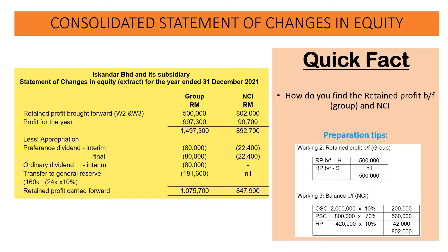For working number three, which is the balance brought forward for the non-controlling interest, we have to calculate the amount based on the percentage of the NCI of the ordinary share and also the percentage of NCI for the preference shares. Meanwhile, for the retained profit portion, we will use the percentage of the NCI for the ordinary share.